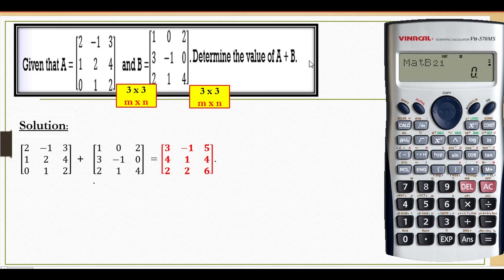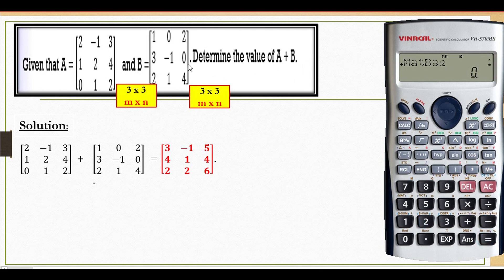Then 2,1 is 3. Then 2,2 is negative 1. Then 2,3 is 0. Then 3,1 is 2. Then 3,2 — third row, second column — is 1. Then the last one, 3,3 is 4. Okay, equal to.